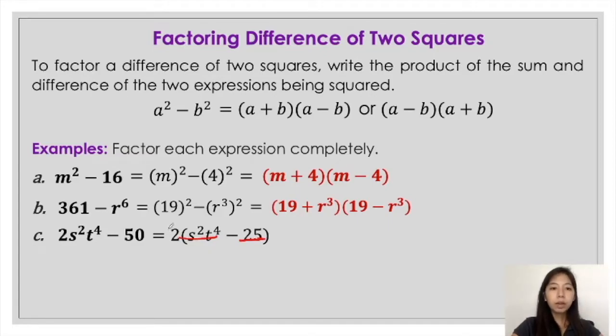So in that case, this is what will happen: 2 is outside, and then rewrite it in such a way that you're going to get the square roots. The square root of s squared t raised to 4 is st squared, and the square root of 25 is 5, and then put the operation.